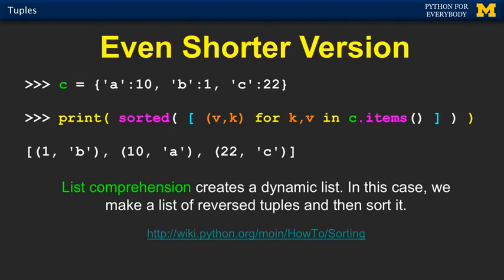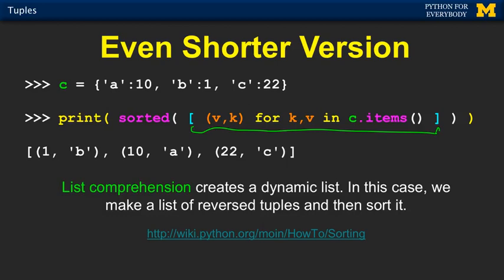And this is it — let you look at it for a second. It uses a part of Python called list comprehension. The tricky bit here is this syntax in the middle. This looks like a list, and it is a list. The difference is instead of expressing the list with appends or as a constant with commas, we're expressing the list as an expression.